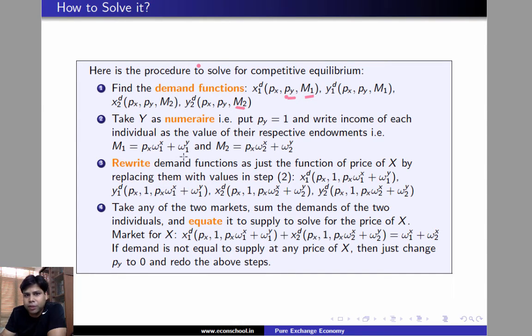We computed in step 2 to get X1D as just the functions of PX. And Y1D will also be the function of PX and same holds for X2D and Y2D. Now, we are going to take any of the two markets because we know Walras' law holds and sum the demands of the two individuals in that market and equate it to supply to solve for the price of X.